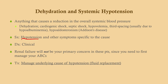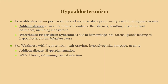Treatment: manage the underlying cause of hypotension and replace fluids. Hypoaldosteronism can also lead to pre-renal failure. If you have low aldosterone, you have poor sodium and water reabsorption — you lose sodium and water in the urine, leading to hypovolemia and hyponatremia: a hypovolemic hyponatremia.